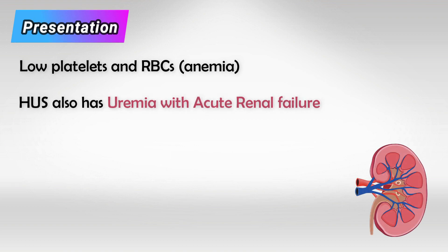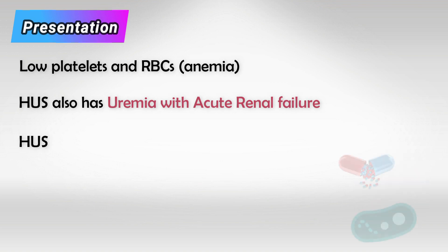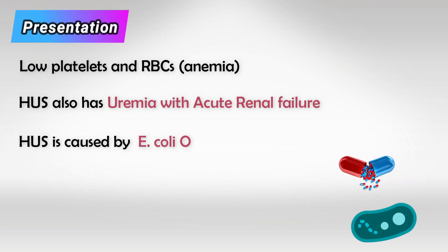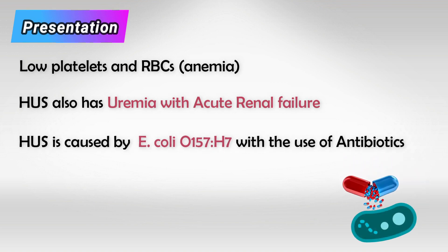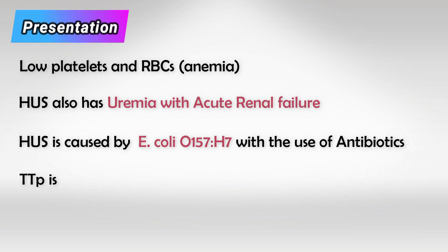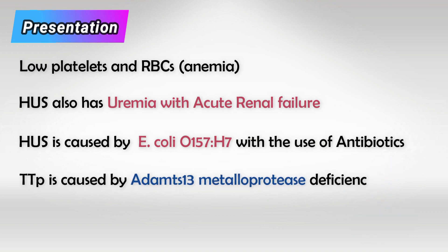Hemolytic uremic syndrome is caused by E. coli O157:H7, with antibiotics used, and TTP is caused by ADAMTS13 metalloproteinase deficiency with outside stressors.